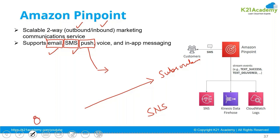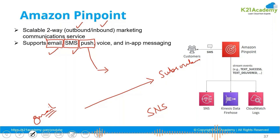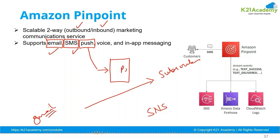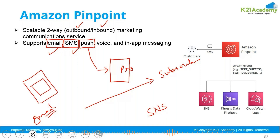When you log in from a new device, Gmail says it seems you have never logged in from this device — kindly approve your login from an already logged-in device. When you click proceed, a message is displayed on your current mobile where you have logged into Gmail. When you click 'Yes' or 'Approve' on that push message, your login to the new browser or device will be successful.